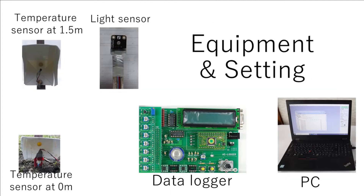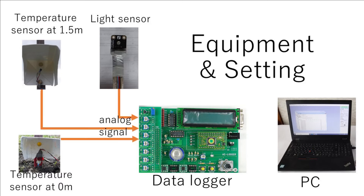Equipment and setting: Set two temperature sensors at 1.5 meter and 0 meter. Connect these two sensors and a light sensor to a data logger. Analog voltage signals are output from three sensors, and the digital signal converted by the data logger is calculated as the temperature and illuminance with the PC.